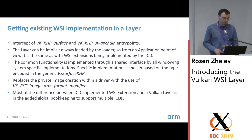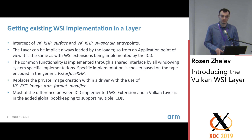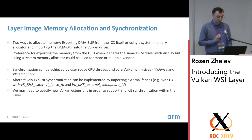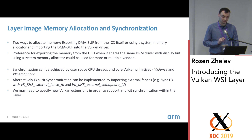We also want to use the image DRM format modifier extension quite extensively to do format negotiation between the windowing system display controller and the Vulkan driver, because we think it is a very useful way to define the layout of a buffer. There are two main points to consider about memory allocation and synchronization as a layer.